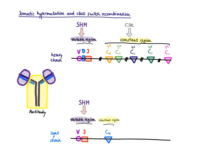In this video I want to talk about two processes that make changes to the antibody genes. They both take place in the germinal center during B-cell maturation. The first process is somatic hypermutation, and the second is class-switch recombination.